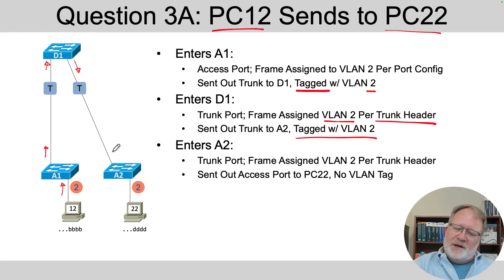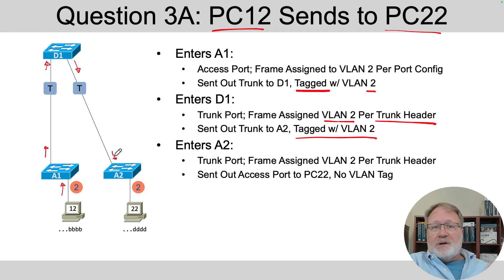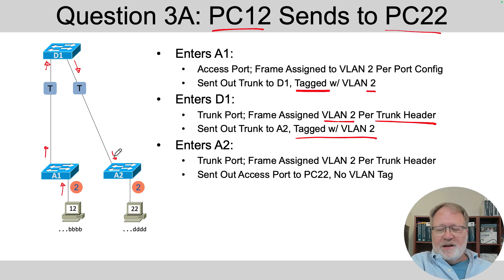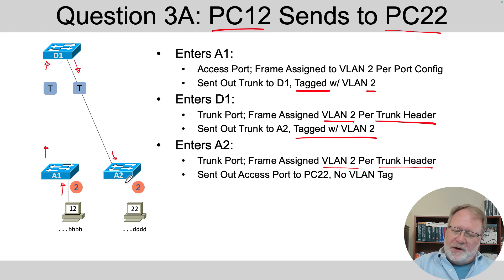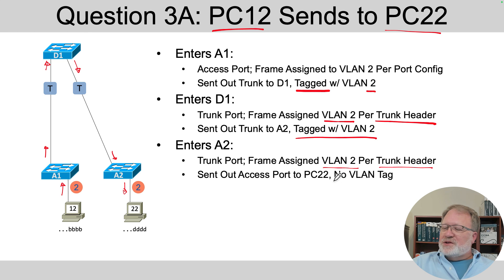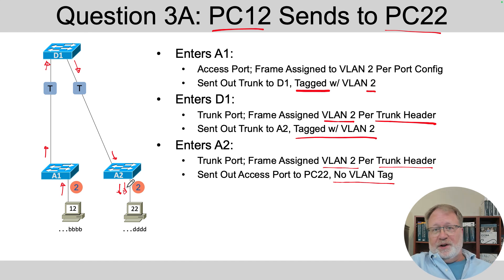Finally the frame enters switch A2, and this is something I'd definitely watch for in an interview to see if you have a complete understanding: the frame comes in a trunk, so it sees VLAN 2 assigned per the trunking header — but we have to remove that tag. So before forwarding out to PC22, the frame is forwarded with no VLAN tag on that last link down to PC22.